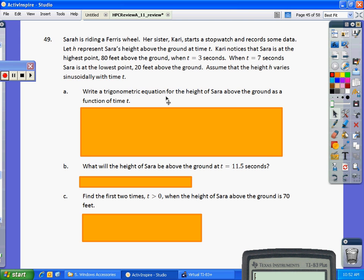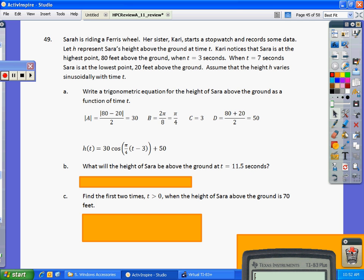Write a trigonometric equation for the height of Sarah above the ground as a function of time. Okay. The amplitude, we know that the maximum is 80 and the minimum is 20. So amplitude is equal to the absolute value of max minus min, or 80 minus 20 divided by 2. So the amplitude is 30.